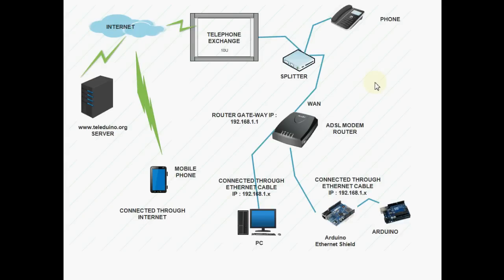Here is the overall connectivity diagram showing how I have connected my project through the internet. You can see my Ethernet shield is connected through the ADSL router via an RJ45 connector and Ethernet cable. This Arduino Ethernet shield is connected to the Arduino UNO, and further the Arduino UNO is connected with the relay board. From this ADSL router, it is connected to a splitter and then to a telephone exchange.